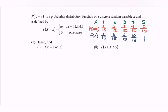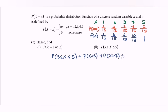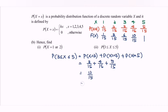Next, referring to part 2, we need the probability that x is between 3 and 5 inclusive. Using the probability distribution table, we sum: P(x=3) + P(x=4) + P(x=5) = 3/15 + 4/15 + 5/15 = 12/15, which can be written as 4/5 or 0.8.